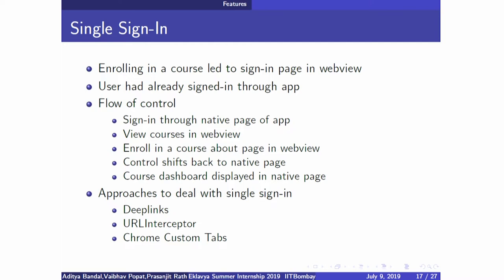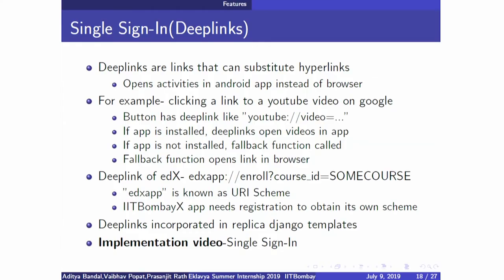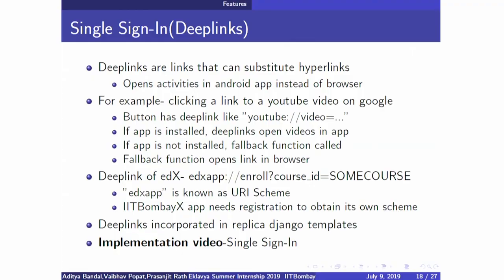We did not use URL interceptor because after that procedure, anything like discussions or notifications would all remain in web view, which we don't want. Chrome custom tabs is a feature for cookie and session management, but it is limited to Google Chrome only. Deep links, which we worked upon, are links that can substitute hyperlinks. For example, in the discovery page when you click on a course, a course info page is generated with an enroll button containing a deep link — for example: edxapp://enroll?course_id=<course_id>. By this, we can immediately skip the sign-in page that appears while enrolling.